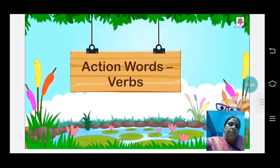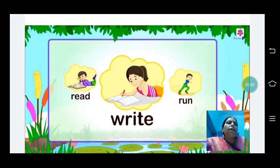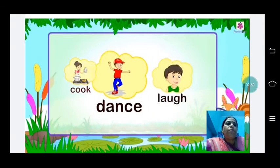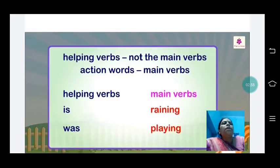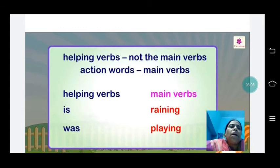Action words like eat, drink, read, write, run, cook, dance, laugh — these are the main verbs, also called action words or doing words. Helping verbs are not the main verbs. For example: 'is' is the helping verb in 'it is raining,' and in 'the boy was playing,' the helping verb is 'was' and the main verb is 'playing.'